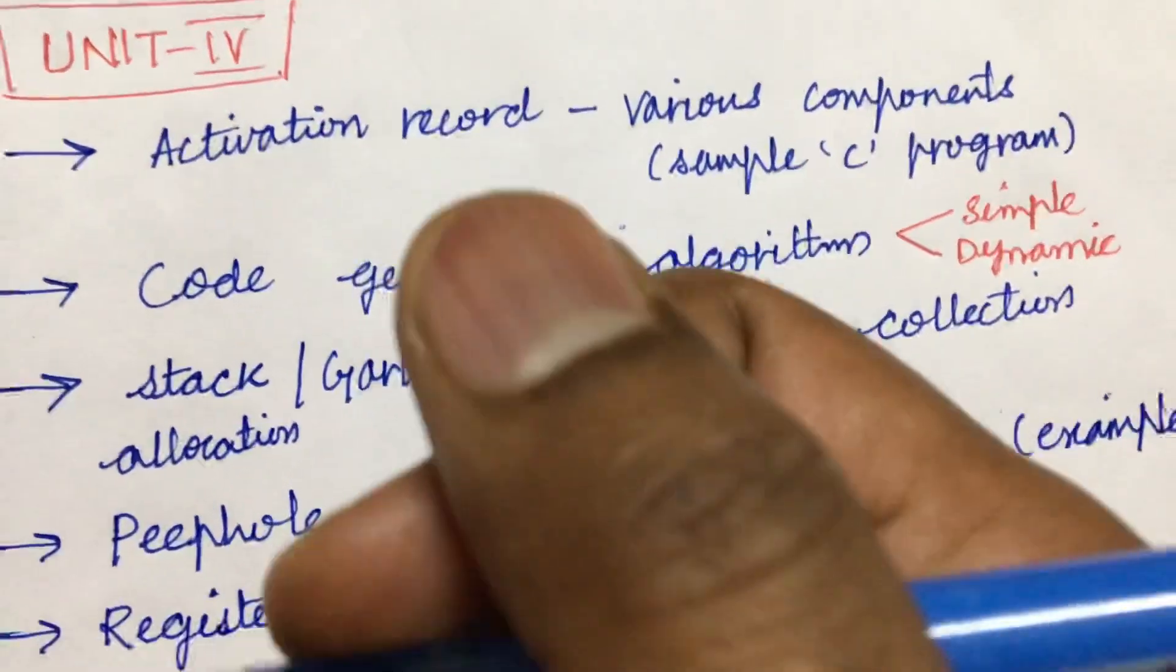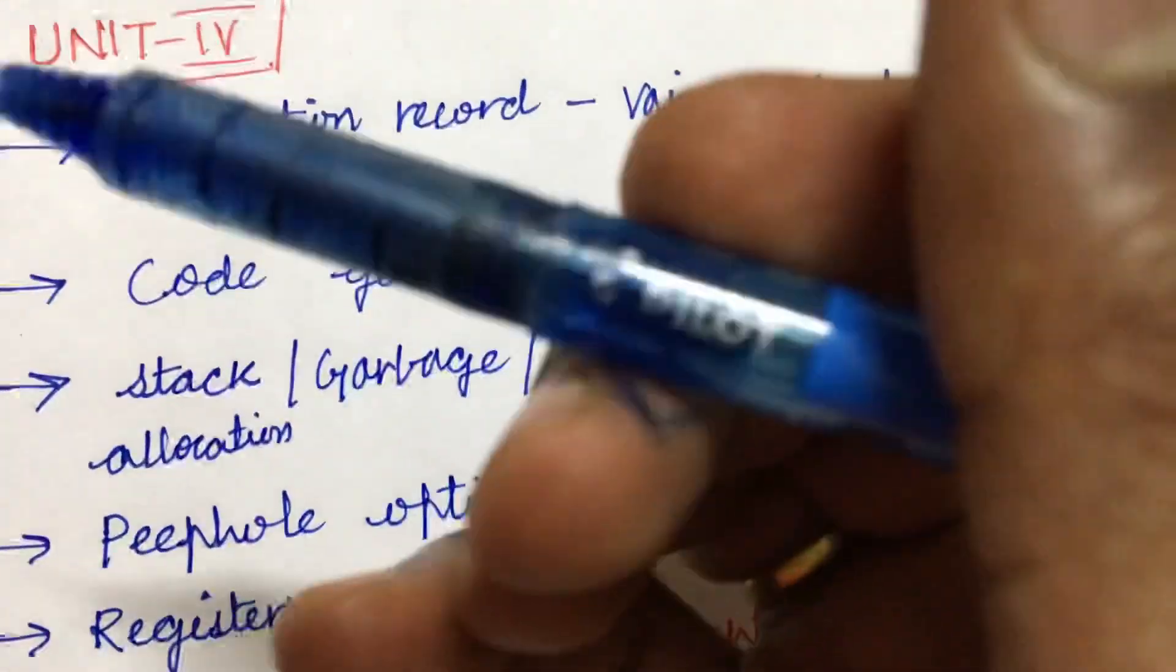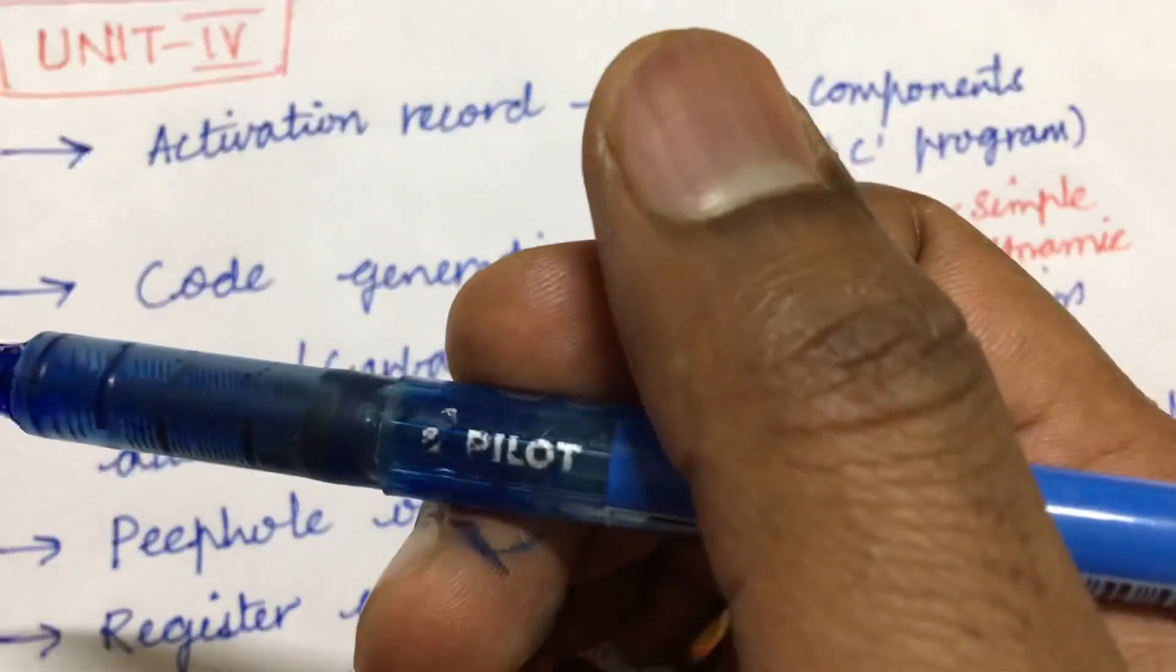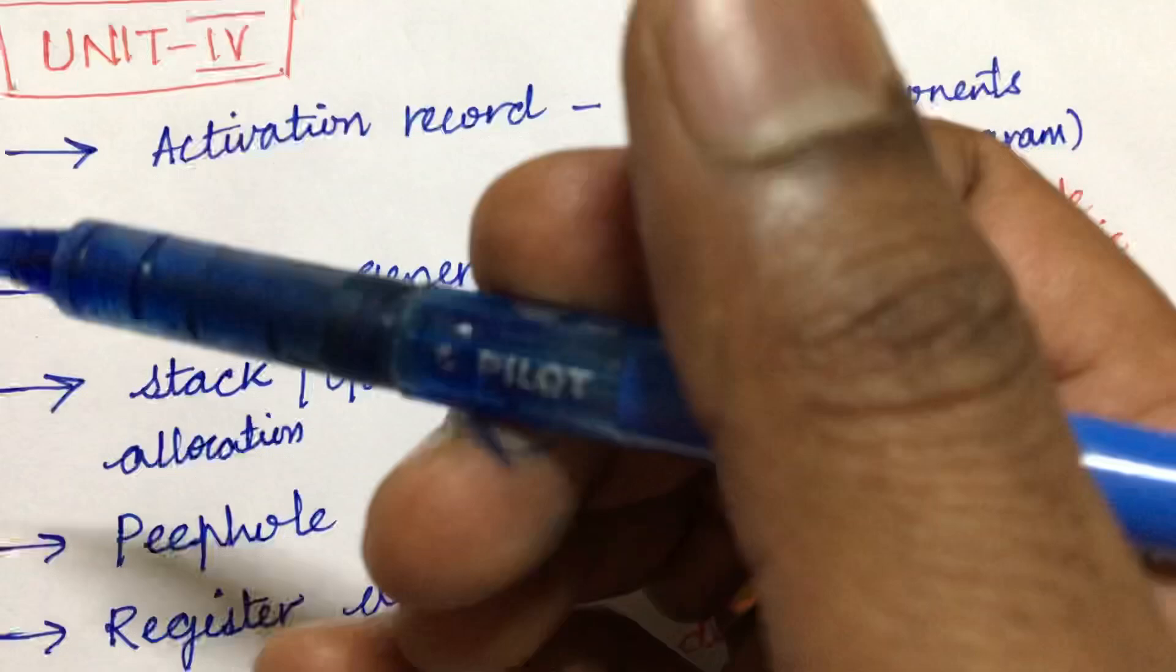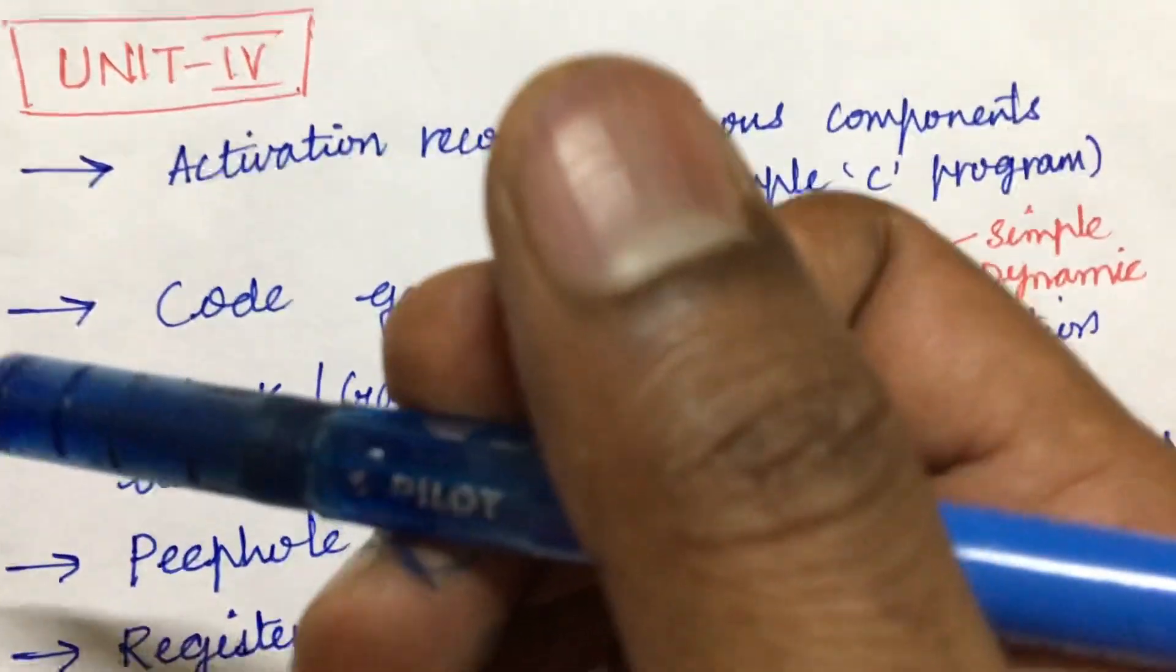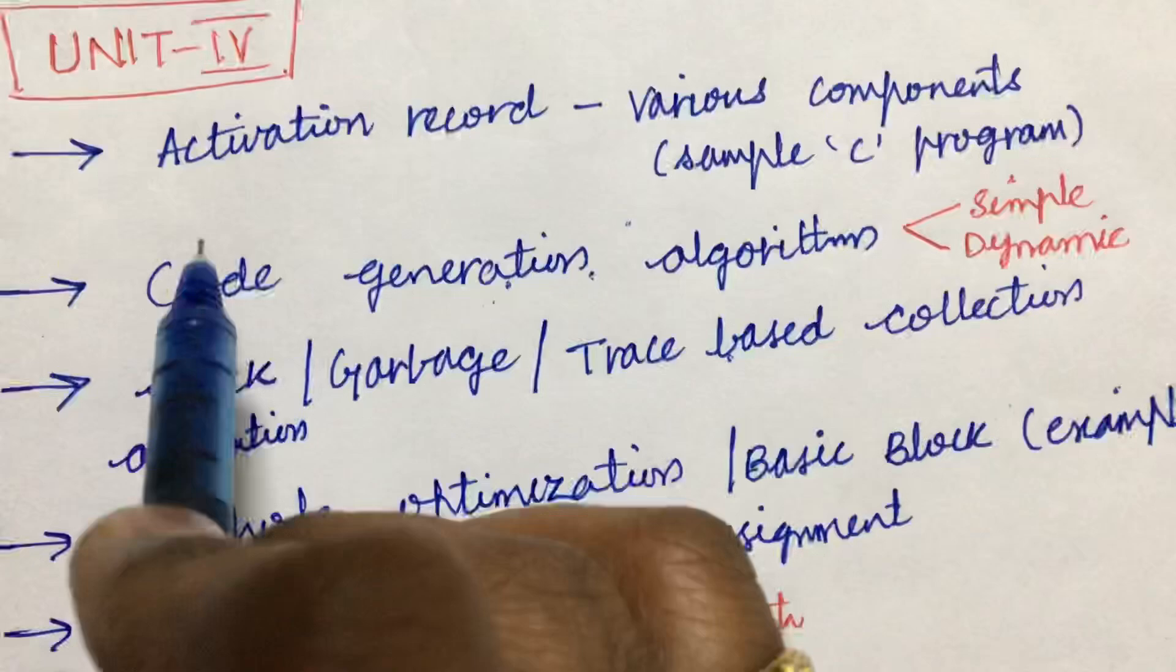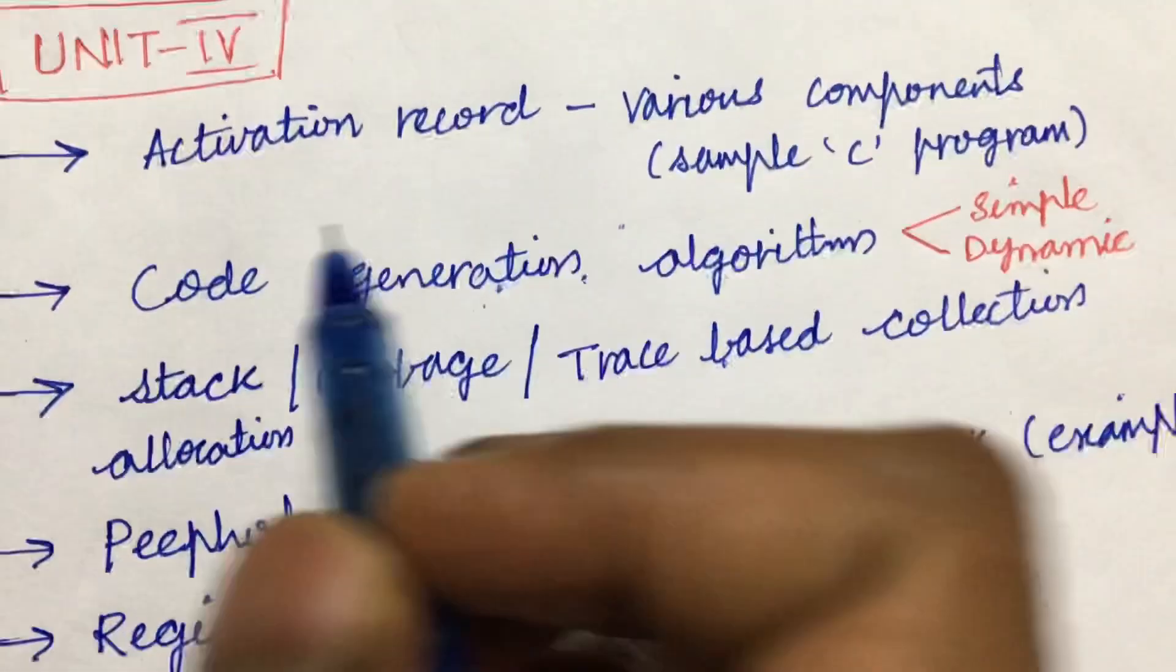Why? Because within a span of one week you are going to take your external examination. Please do prepare for the internal 2 to score better marks, as well as these questions will be repeated even in your external examination. Let's look into the fourth unit. It is all about the activation record and its various components, which is asked several times to explain with the help of a sample C programming.